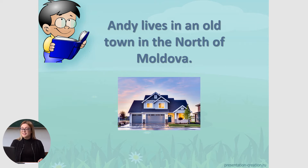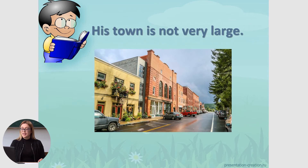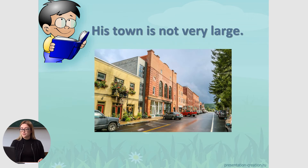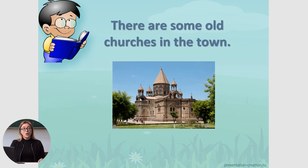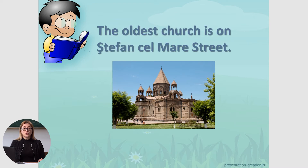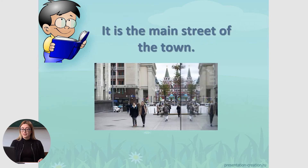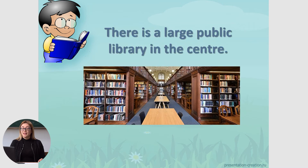Andy lives in an old town in the north of Moldova. His town is not very large. There are a lot of new buildings in it. There are some old churches in the town. The oldest church is on Stefan Chalmary Street. It is the main street of the town. There is a large public library in the center.